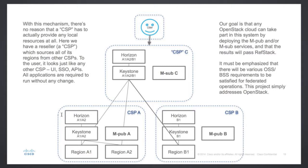If you have that kind of model, you can actually become a reseller without having a cloud of your own. Here we have cloud service provider C, who doesn't have any local regions of their own. But that's okay — they can discover virtual regions available from cloud service providers A and B, and publish them to their users as though they were local regions of cloud service provider C. The goal here is to enable a pure reseller or pure broker model. And obviously some large end users will want to use this kind of pattern to support their consumption of cloud services.